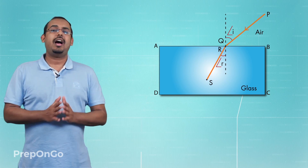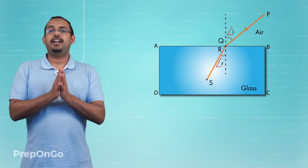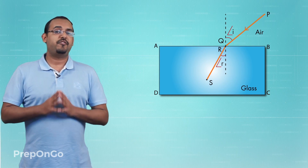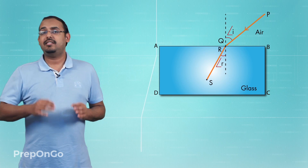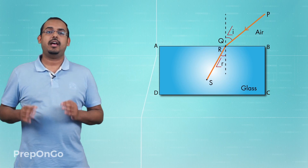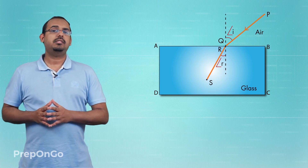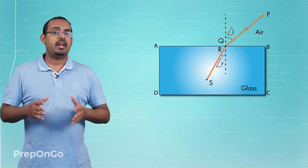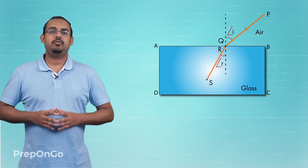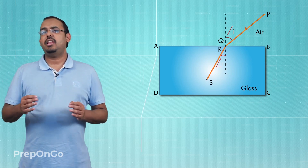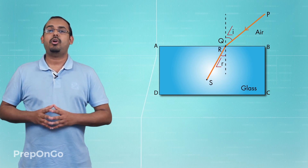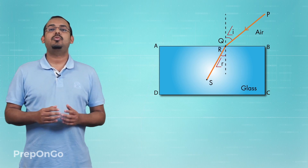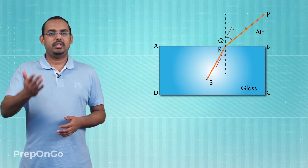In this lecture, we have gone through the phenomenon of refraction of light as it happens through a rectangular glass slab. We made some observations and talked about the two laws of refraction that govern the study of refraction of light. In our next lecture, we will talk about another very important concept related to refraction of light, which is known as refractive index. See you in the next lecture.